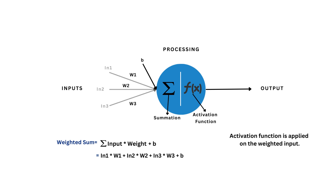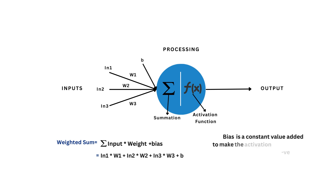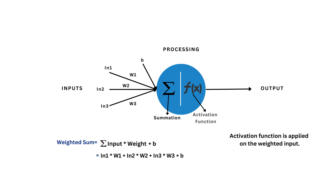Inputs are multiplied by weights, which determine each input's significance or importance. The weighted inputs are then added and a bias term is introduced to the sum. Once the inputs are combined, the neuron applies an activation function, which decides whether the neuron should fire or activate based on the total input — it's like the neuron making a binary decision.